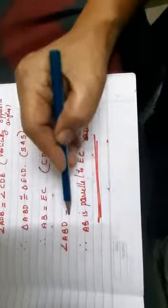And angle ABD is equal to angle DC is CPCT. Therefore, AB is parallel to EC because ABD and DCF are alternate angles.